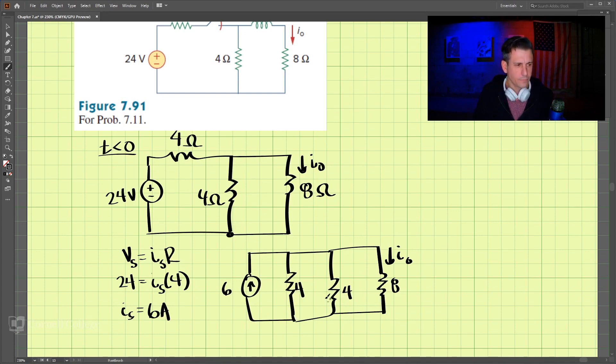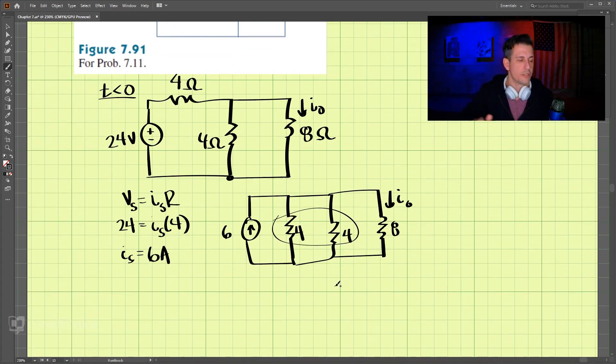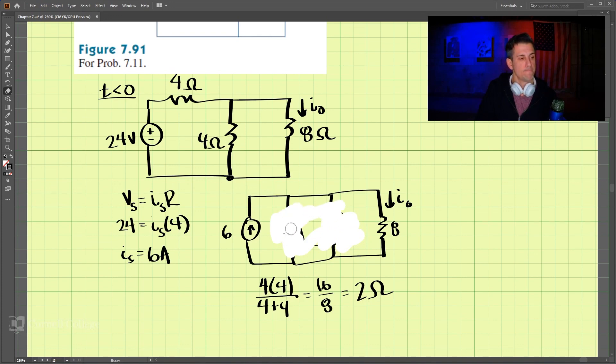So these are both 4 now. And then we have our 8-ohms, and we're still looking for I-naught here. These two are in parallel, so we can join those together in parallel. Let's just redraw this.